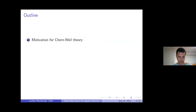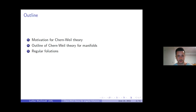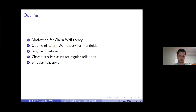I'm going to start out by trying to motivate Chern-Weil theory. I'll outline how it works for manifolds, and in particular outline how it works going via jet bundles, which is very useful for foliations. I'll then talk about regular foliations and how characteristic classes can be defined via Chern-Weil theory, discuss singular foliations, and how these techniques apply to them.